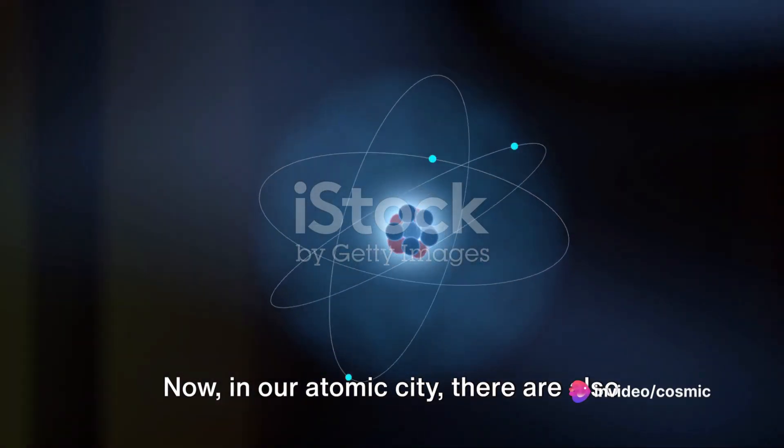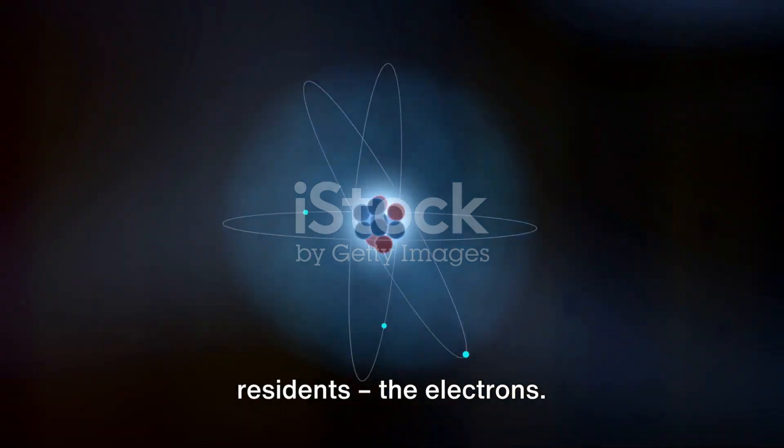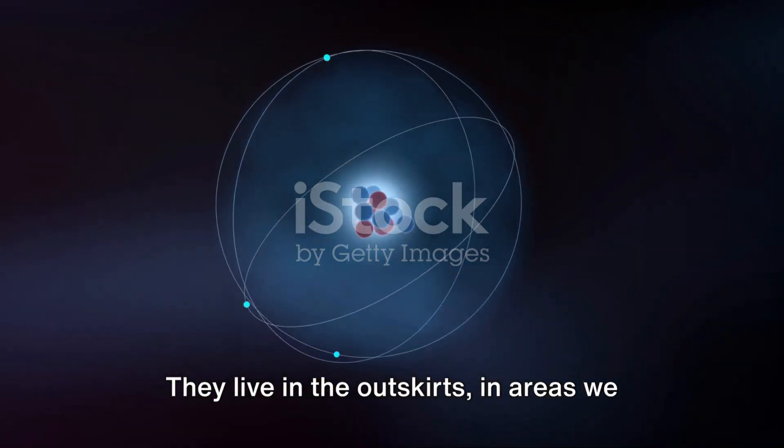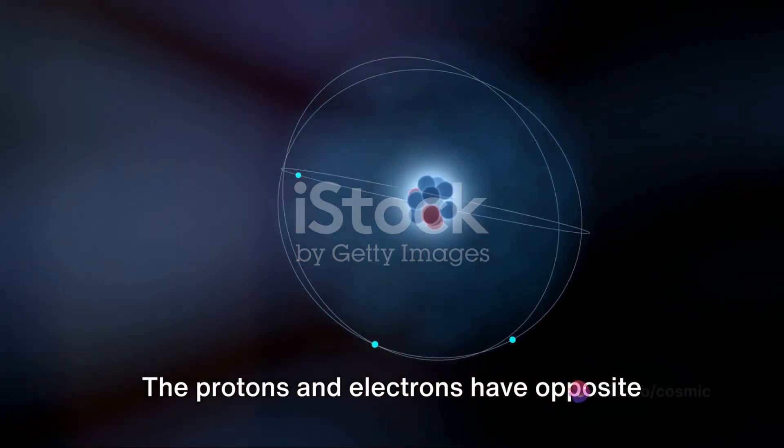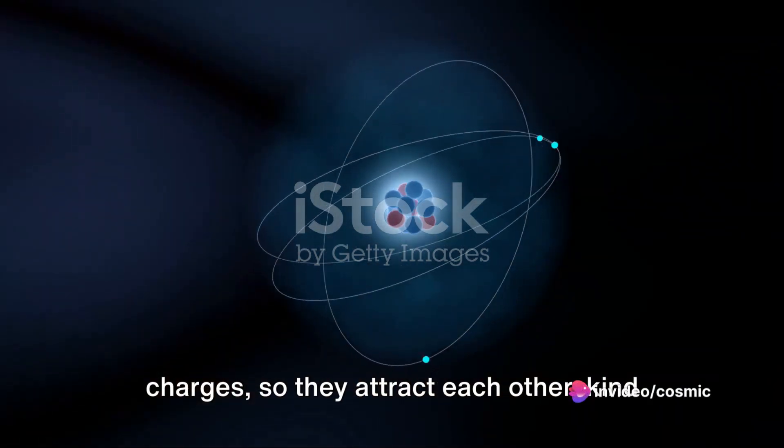Now, in our atomic city there are also residents, the electrons. They live in the outskirts in areas we call electron shells. The protons and electrons have opposite charges so they attract each other.